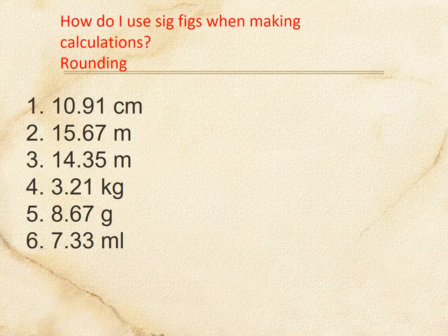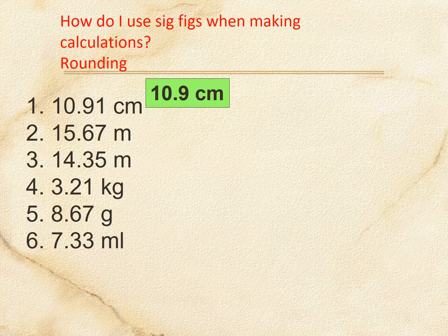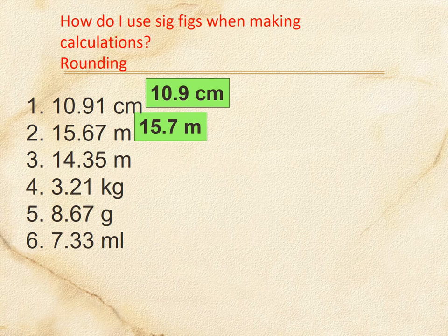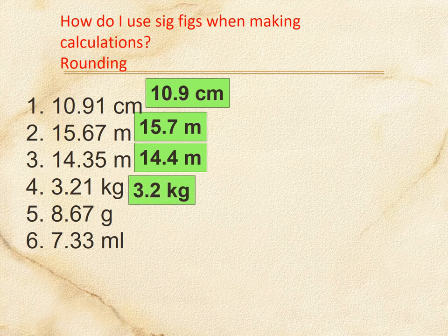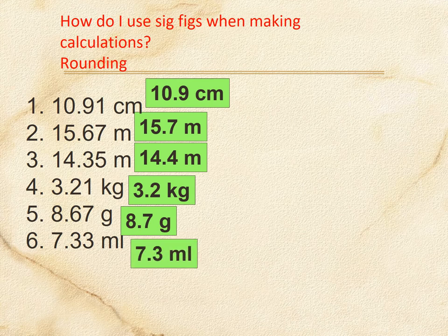For sig fig rounding: if rounding to one decimal place, 10.9 stays at 10.9. 15.67 rounds up to 15.7 because the 7 is greater than five. 14.35 rounds to 14.4. 3.21 stays at 3.2. 8.67 rounds to 8.7. And 7.33 stays at 7.3.